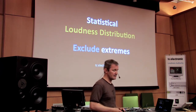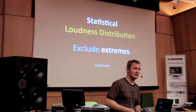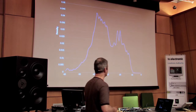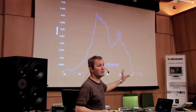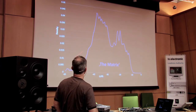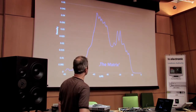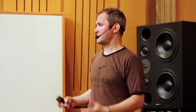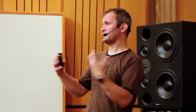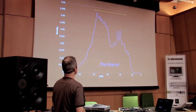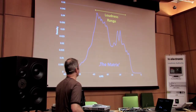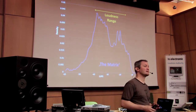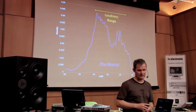TC Electronic developed that algorithm and gave it to the EBU as an open standard. As an example, The Matrix — a movie you all know — has two prominent humps in its statistical density: here is all the dialogue, here are most of the action scenes. Loudness range anticipates the distance between the average soft and the average loud parts of a signal. For The Matrix, that's 25 LU.